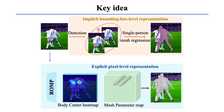We estimate a body-center heatmap and a mesh parameter map from the image. To obtain output bodies, we sample the parameter vectors from the mesh parameter map based on the guidance of the body-center heatmap. The pixel-level body-center heatmap helps disambiguate people.